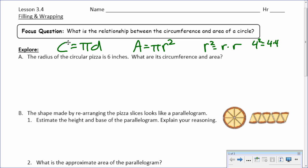So, under part A, it says the radius of a circular pizza is 6 inches. So if we draw our pizza here, the radius, again, remember, from the center to the edge of the circle, right, is 6 inches. What are its circumference and area?